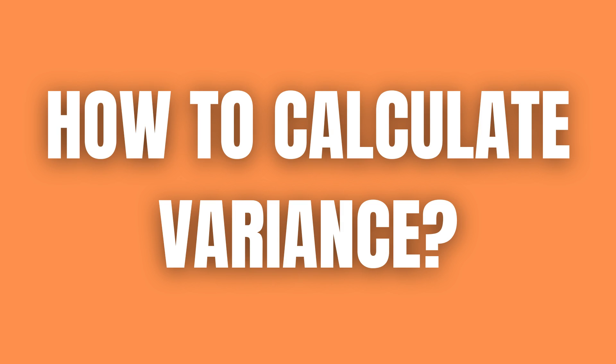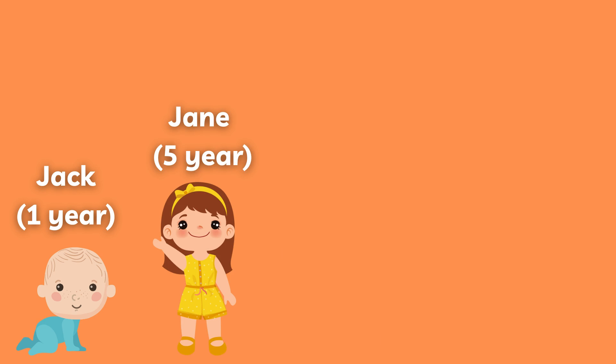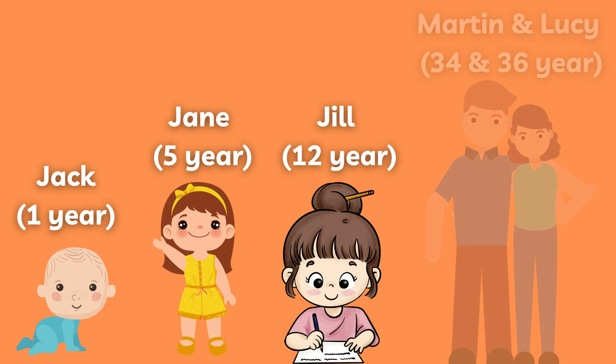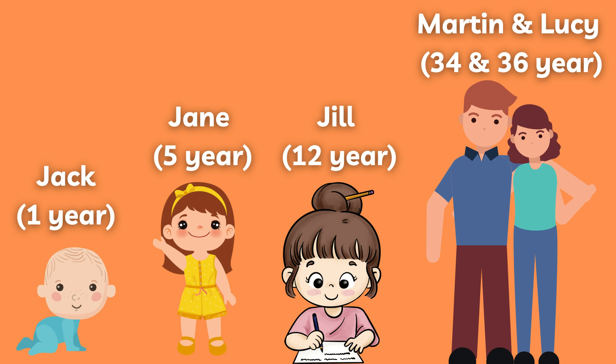How to calculate it can best be visually represented by considering a family of three children ages 1, 5 and 12, as well as their two parents aged 34 and 36.